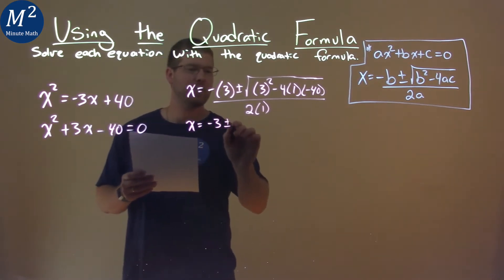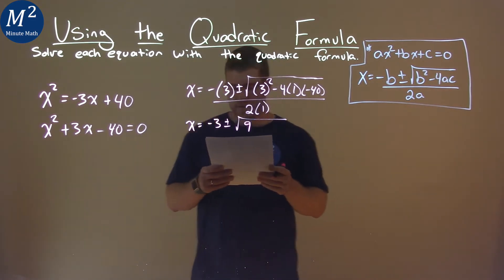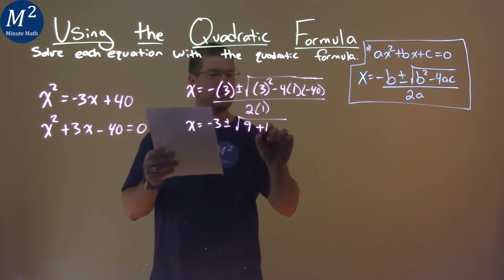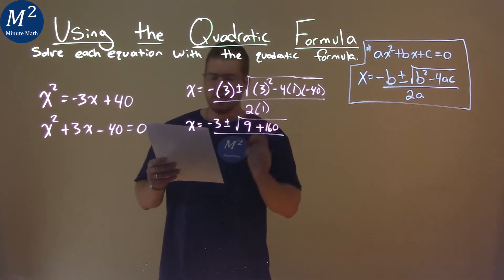Minus 3 plus or minus square root, 3 squared is 9, and then 4 times negative 40 is a negative 160, but double negative makes it a positive, so we have plus 160. It does multiply by 1, but we don't care about that. 2 times 1 is 2.